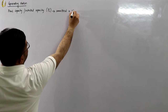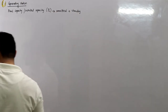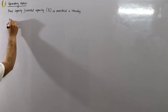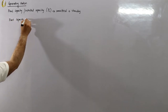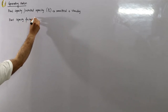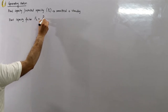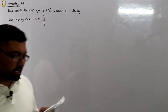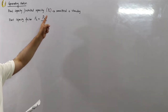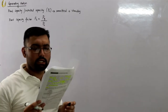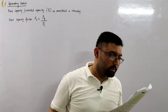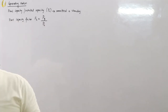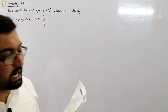Now we move to the plant capacity factor, denoted by FC. This is the ratio of the average demand on the station, represented by PG, to the installed capacity PC. So FC equals average load PG divided by installed capacity PC. This is a measure of the operating efficiency and also a measure of the reliability of the supply.